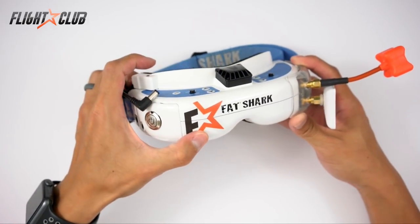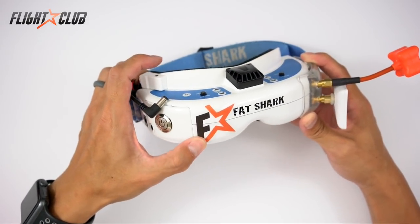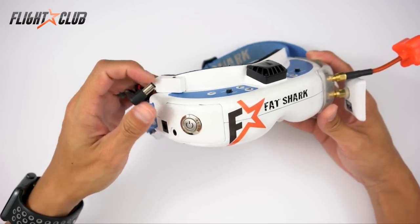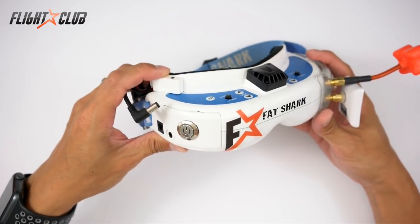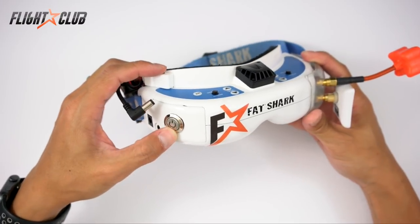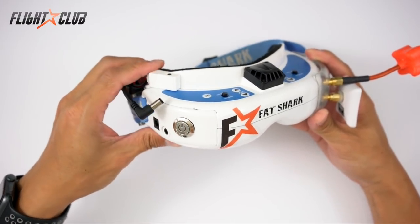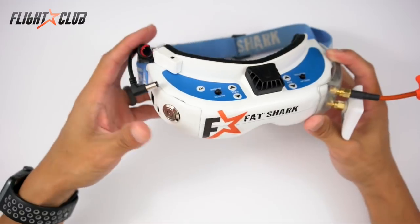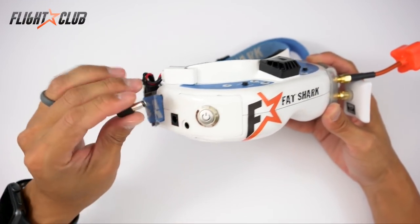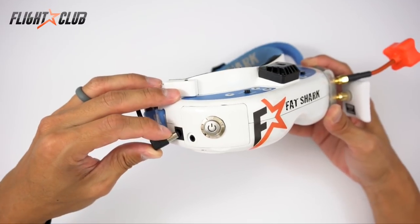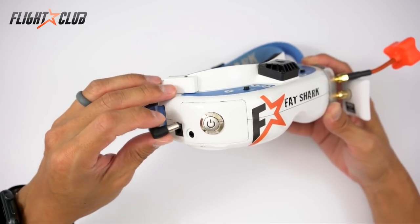I'm using the Fatshark Dominator V3s. I tried the HD version but didn't really like the image. For some reason it just made me feel like I'm looking through the goggles cross-eyed. I'm not sure why Fatshark doesn't make this a standard feature because fumbling around with this power plug sometimes is a pain in the butt to try to power it on.